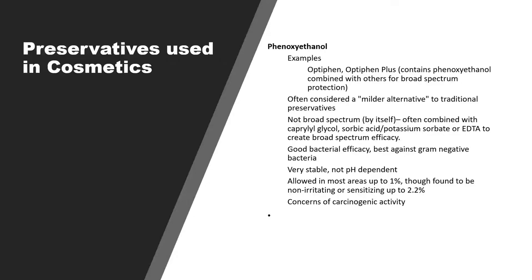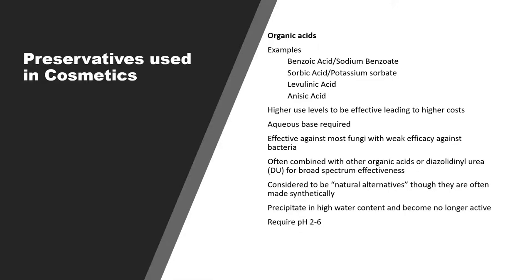All these antimicrobials have restricted use — they are beneficial up to a certain extent, and their limits must be checked before formulating. Another category of antimicrobials includes various organic acids like benzoic acid, potassium sorbate, sodium benzoate, and anisic acid. Their higher use levels needed for efficacy lead to higher cost compared to parabens. An aqueous base is required; they are effective against most fungi but have weak efficacy against bacteria. They are often combined with other organic acids or antimicrobials, considered natural alternatives though often made synthetically. They precipitate in high water content and require a pH range of 2 to 6.